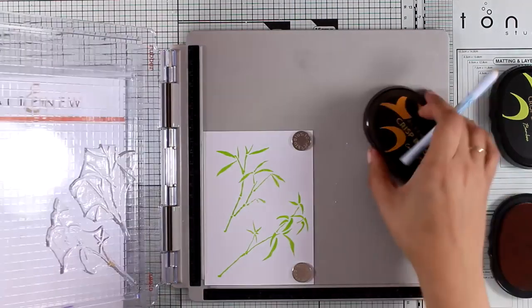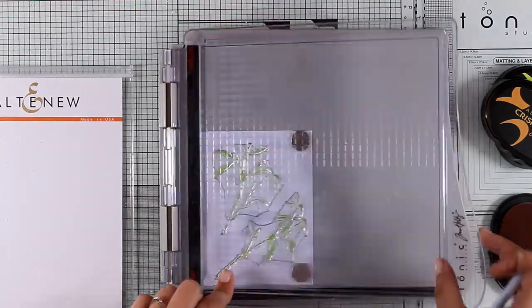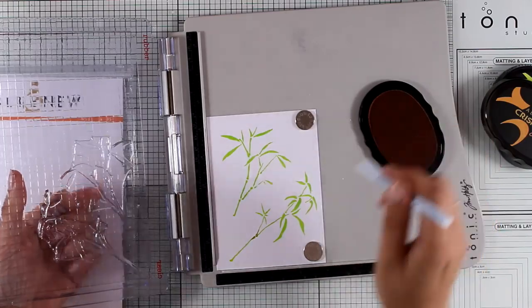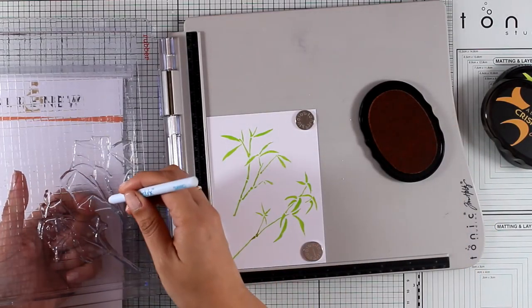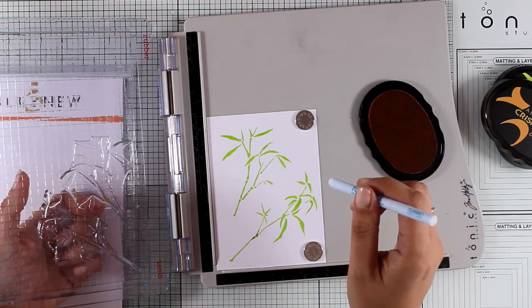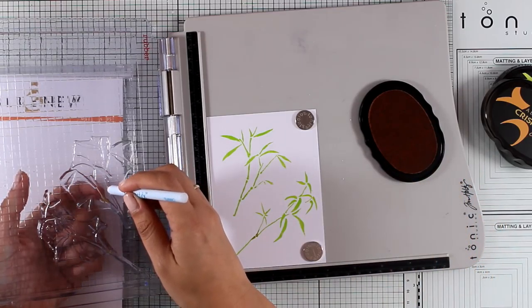Now in the bamboo trees there are some bumps, some knobs—I don't know what you call those—and they are always darker than the rest of the tree. And that's exactly the spot where I want to have that orange color. So just because my ink pad is quite big, I decided to apply the ink in the areas that I want to...